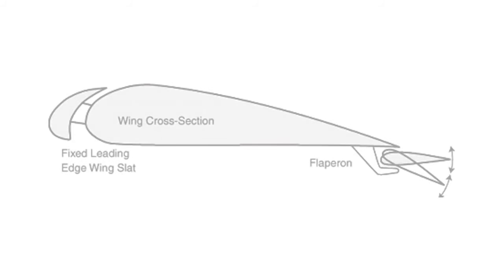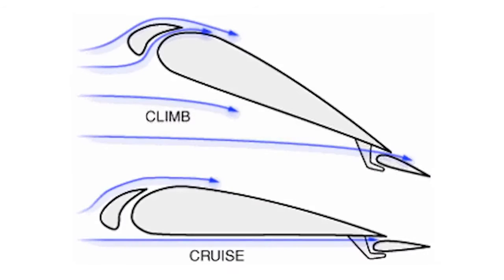Slats are aerodynamic surfaces on the leading edge of the wing which, when deployed, allow the wing to operate at a higher angle of attack. A higher coefficient of lift is produced as a result of angle of attack and speed. So by deploying slats, an aircraft can fly at slower speeds, or take off and land in shorter distances.